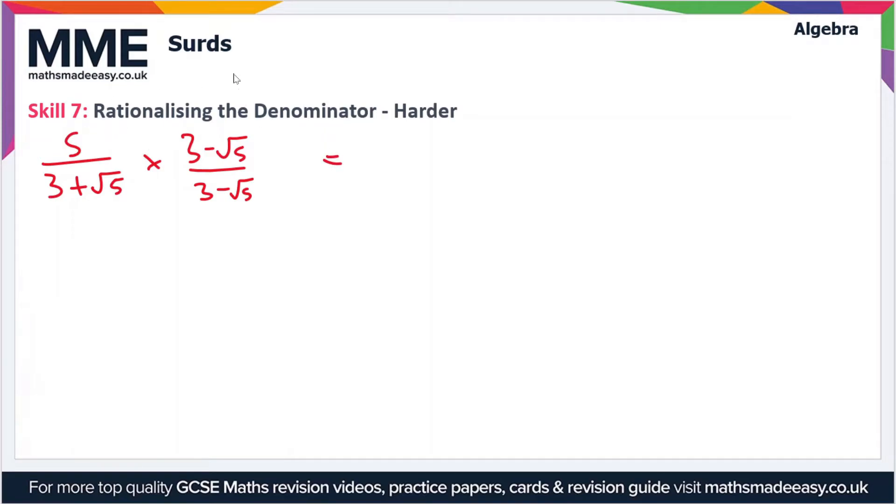So let's first multiply the numerators together. So we've got 5 times 3 minus root 5. And we're dividing this by 3 plus root 5 times 3 minus root 5.